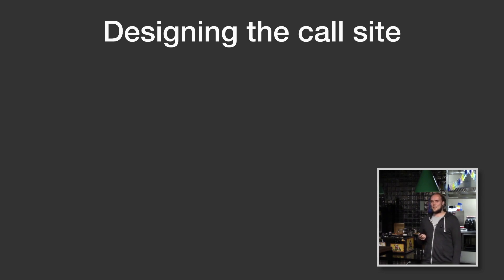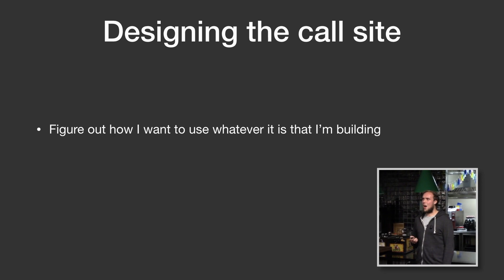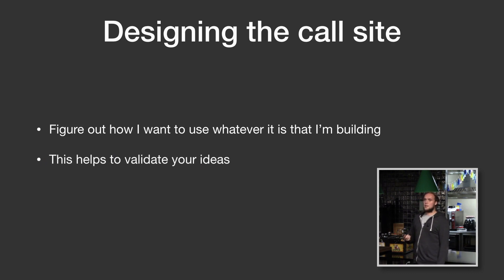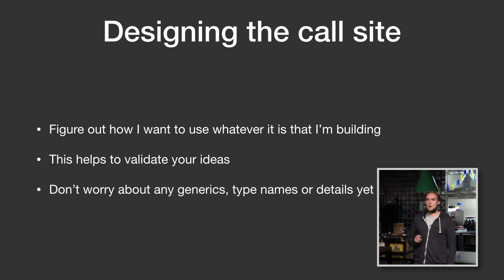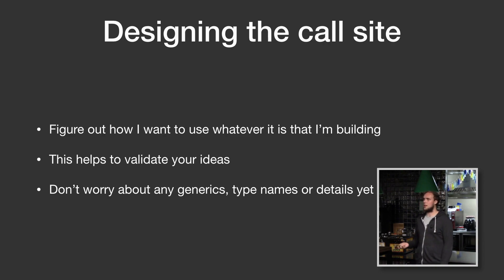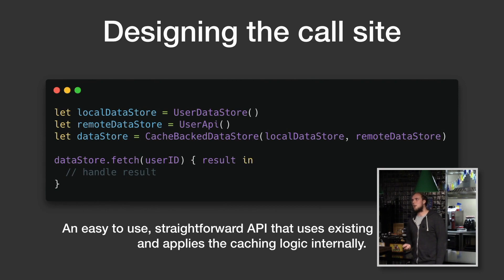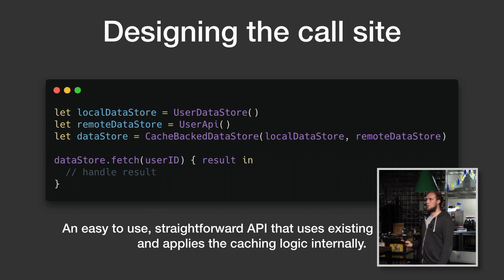So I started off designing the call site for this cache thing. First, I figure out what it is that I'm trying to build, and how I want to use it. How am I going to write code that utilizes this complicated thing? The reason I do that is it helps me validate my ideas and see that what I'm about to build is actually going to be useful and hopefully work. At that point I'm not worrying about generics yet — I write something at a high level. I have a local data store, a remote data store, and then another data store which is really the cache. And I can fetch something and get a result. Simple.